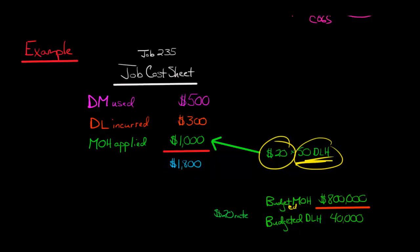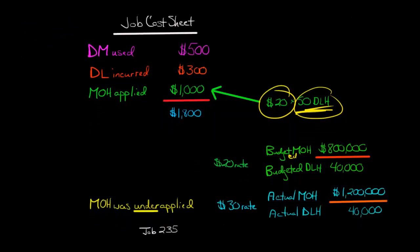Now, let's say it's the end of the period. We made a mistake because actually the actual manufacturing overhead was a lot more than what was budgeted. It ended up being $1.2 million instead of $800,000. Let's just assume for purposes of simplicity that the direct labor hours, the actual amount, was the same as the budgeted amount. So we'll just change one thing here - there's more actual manufacturing overhead.